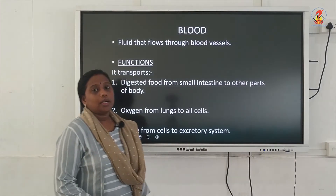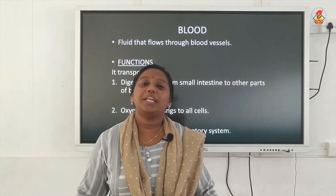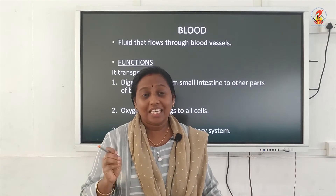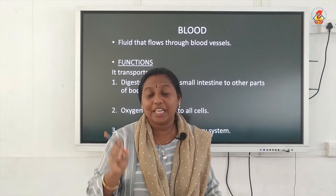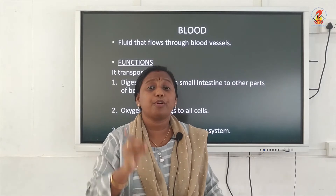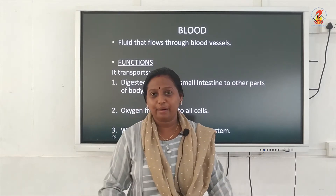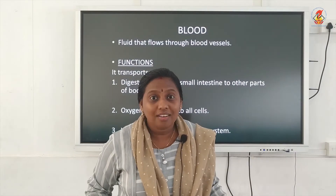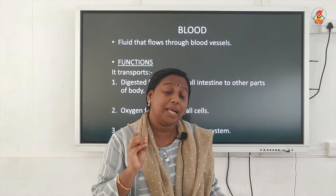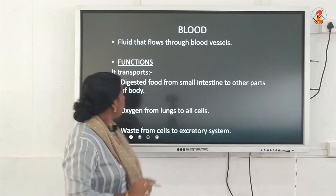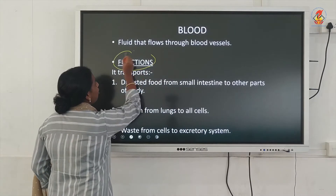The main circulatory fluid in our body is blood. Blood is red in color and fluid in nature — it is the circulatory fluid in our body. Blood helps in the transport of various materials inside our body. Now we will see what are the different functions of blood, or what all things does the blood transport in our body.